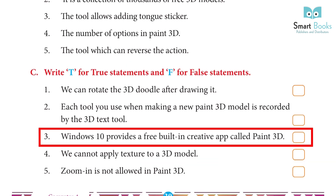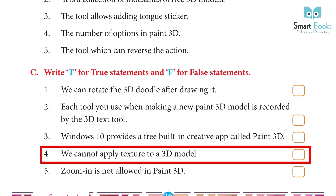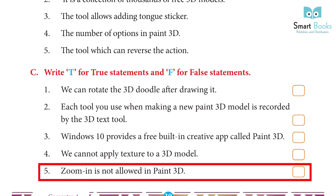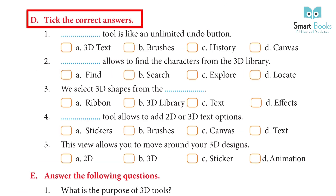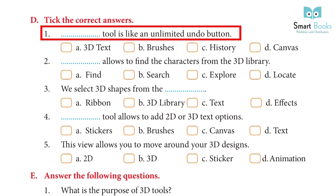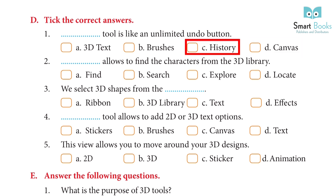3. Windows 10 provides a free built-in creative app called Paint 3D. Answer: True. 4. We cannot apply texture to a 3D model. Answer: True. 5. Zoom in is not allowed in Paint 3D. Answer: False. D. Choose the correct answers. 1. Dash tool is like an unlimited undo button. A. 3D text, B. Brushes, C. History, D. Canvas. Answer: C. History.